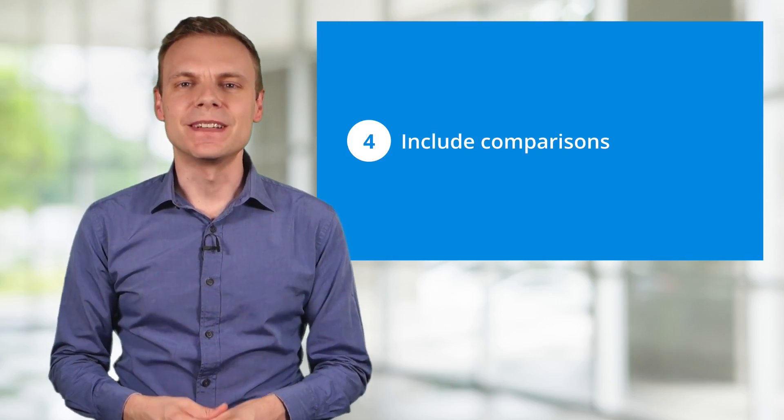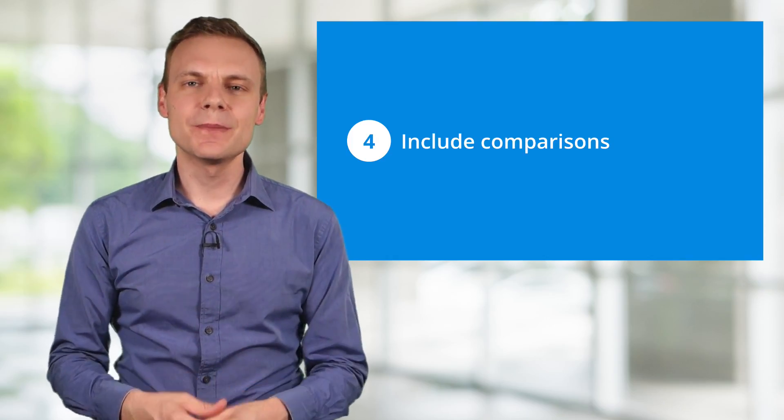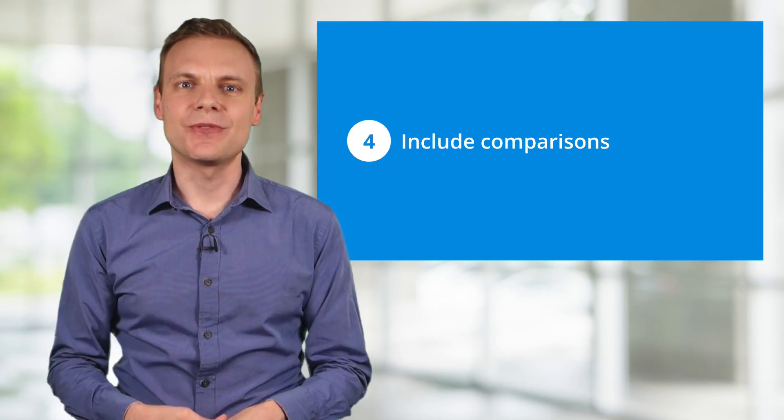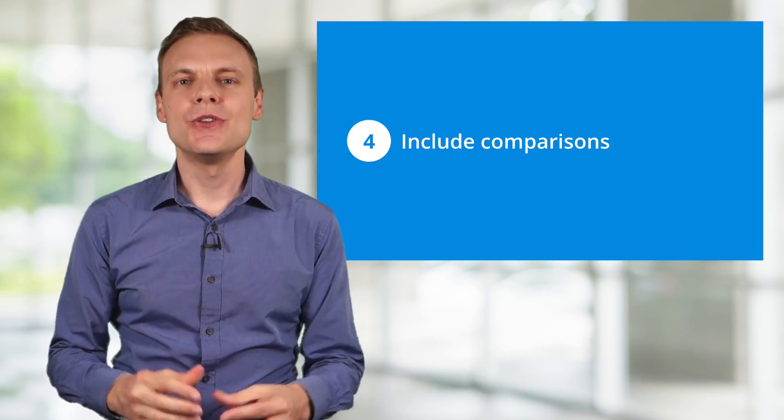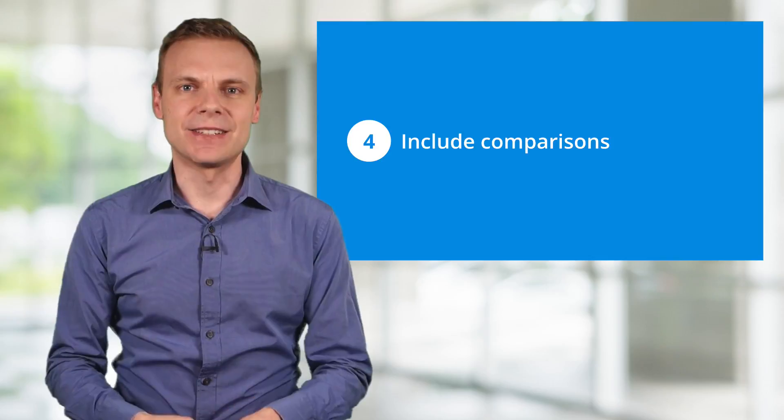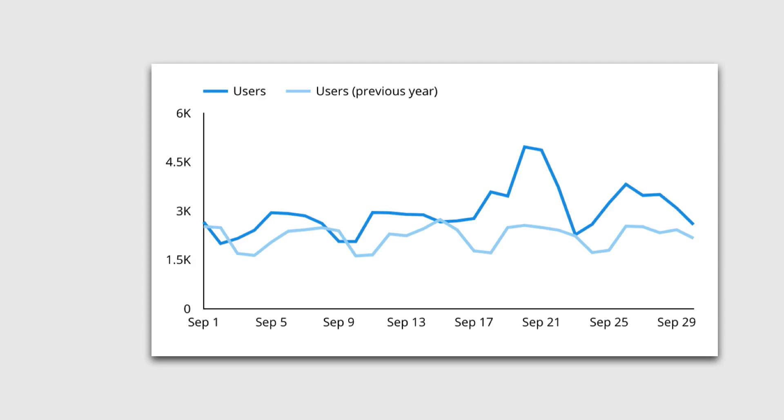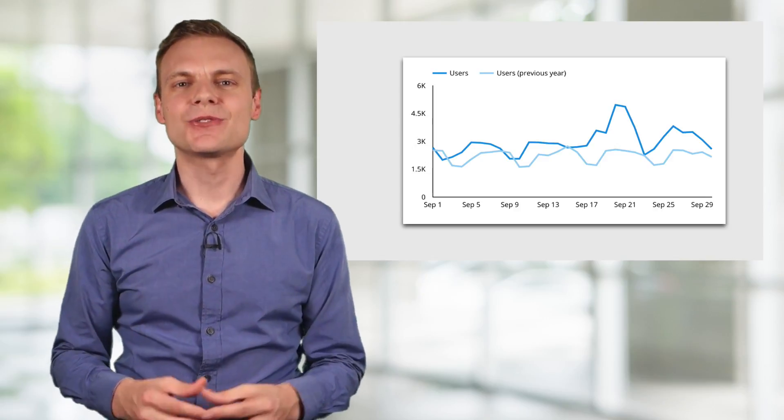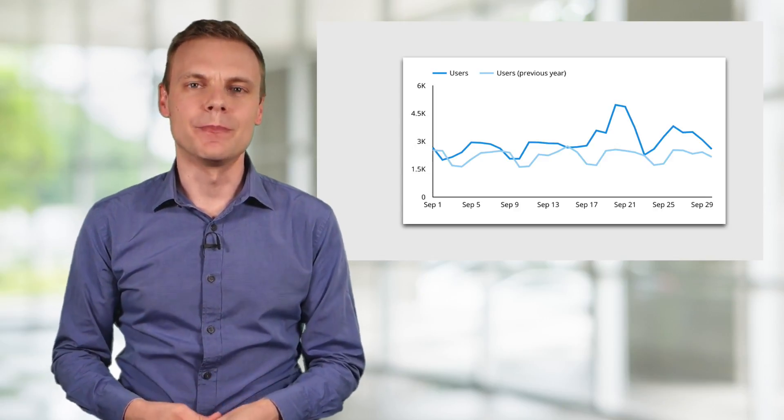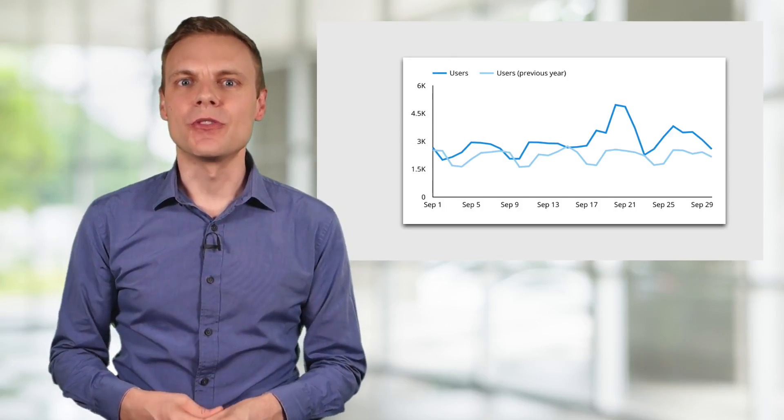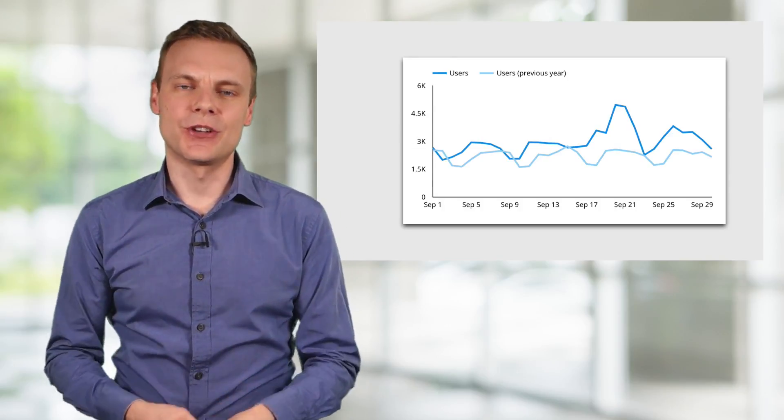Tip number four is including comparisons. When you include a comparison it makes it easier to identify seasonal trends in the data. You can do this quickly by including a date range comparison. For example, if you have a seasonal campaign every year, then including a year-on-year comparison like this one makes it easy to compare performance. And when you include comparisons, try to keep lines in the chart to a minimum. One or two lines are ideal, but don't include more than four as it will become difficult to interpret.